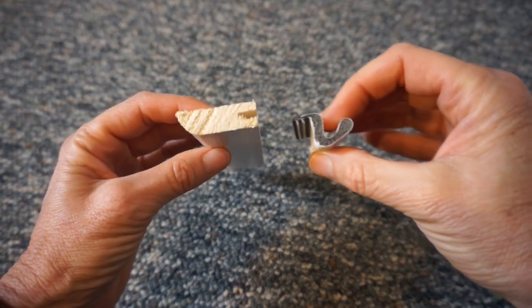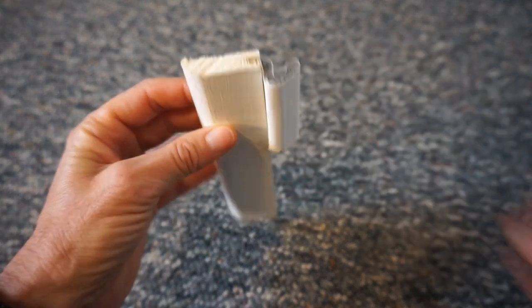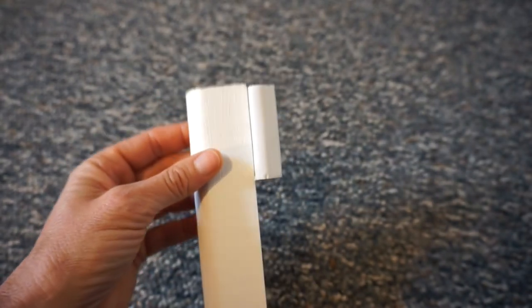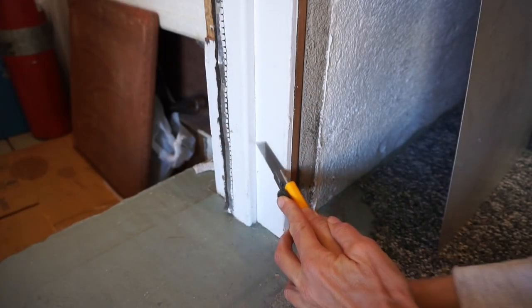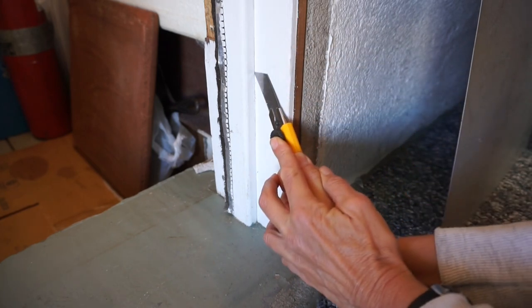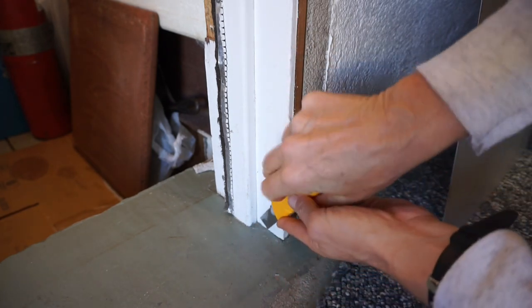The old weatherstripping on this door is nailed to the doorstop molding. The old molding doesn't have a groove in which to insert a modern weatherstripping seal. I use a sharp utility knife to cut the paint between the doorstop and the door jamb.